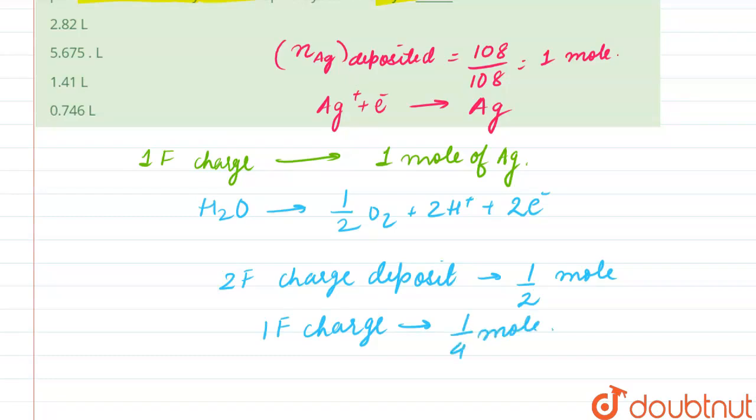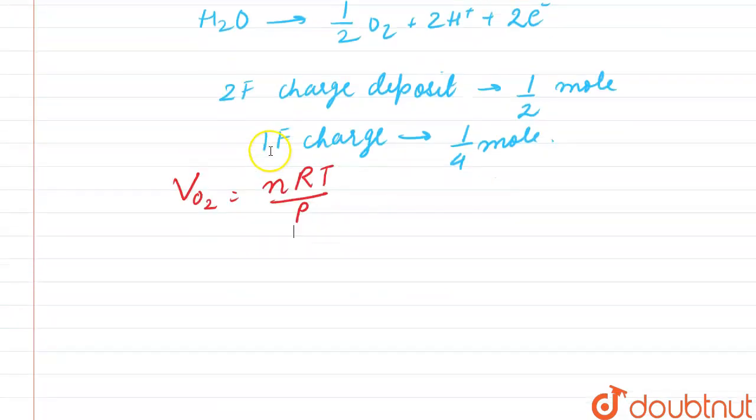So we know that V of O2 will be equal to nRT by P. Alright. So from this, after solving, we can say that substituting the values: N is 1 by 4, R is 0.082 into 273, and P is 1, which on calculation gives us the value of 5.675 liter.